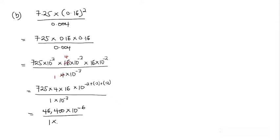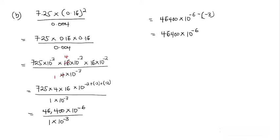Forty-six thousand four hundred divided by one gives forty-six thousand four hundred. We send ten to the power negative three from the denominator to the numerator — the division sign means the exponent changes sign — so negative three becomes positive three. We now have forty-six thousand four hundred times ten to the power negative six plus three, which equals forty-six thousand four hundred times ten to the power negative three.